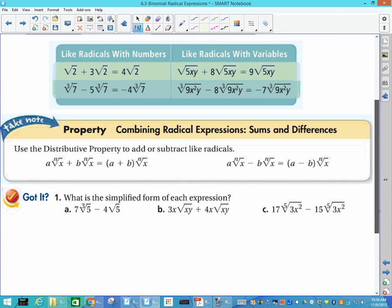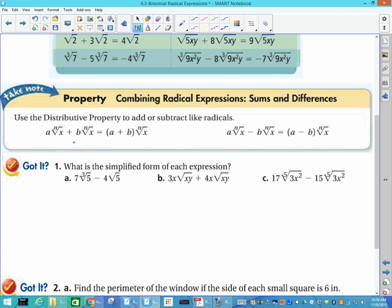So, combining radical expressions, sums and differences. They're showing you that you use the distributive property, but we've already talked about it. If the blobs are the same, then you either add the numbers that are on the outside, or you're going to subtract those numbers on the outside. But it's the distributive property that allows us to do that. So, when I'm looking at what is the simplified form of each expression.